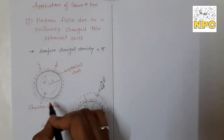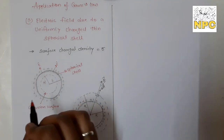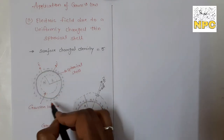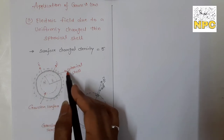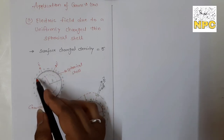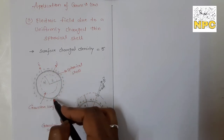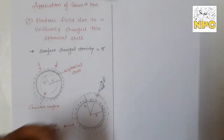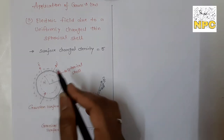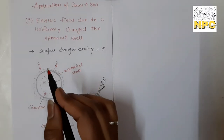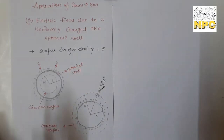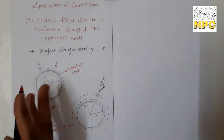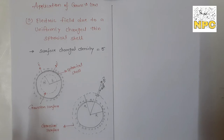The spherical shell has a positive charge distributed uniformly on its surface. If the charge is positive, the electric field will be directed outward. If it is negative, the direction of the electric field will be inward.